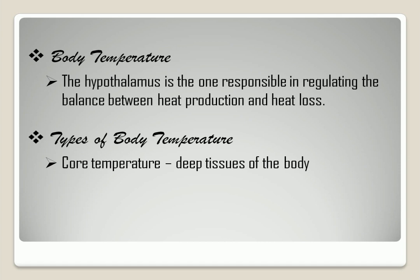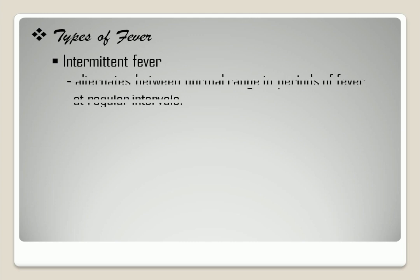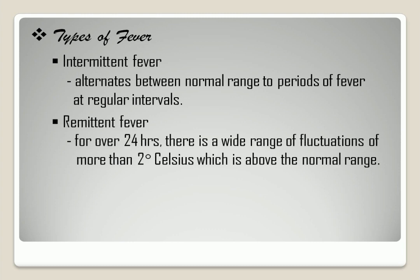Surface Temperature is the temperature of the skin, which can be affected by environmental factors. Types of Fever: Intermittent Fever — body temperature that alternates between normal range and periods of fever at regular intervals. Remittent Fever — for over 24 hours, there is a wide range of fluctuations of more than 2 degrees Celsius, which is above the normal range.